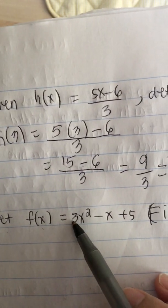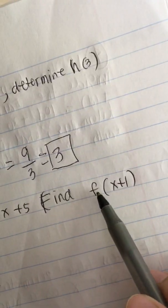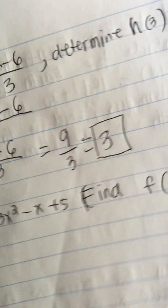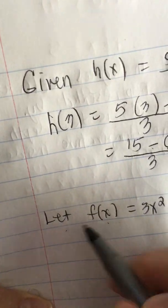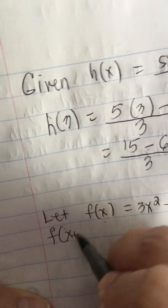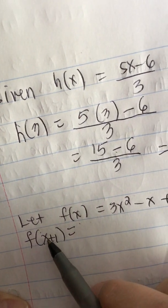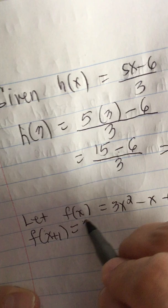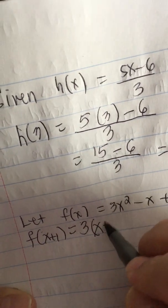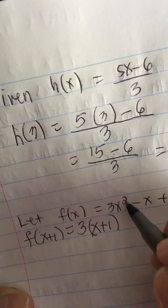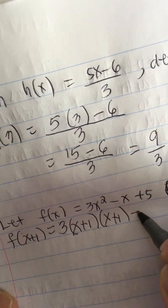Next one, let f(x) equal 3x squared minus x plus 5. Find f(x plus 1). It's the same problem, so we find f(x plus 1) equals, whenever there's an x we replace it with x plus 1. So we have a 3, that was x, so x plus 1. Now it is squared, so it means two times, so one more x plus 1, minus.